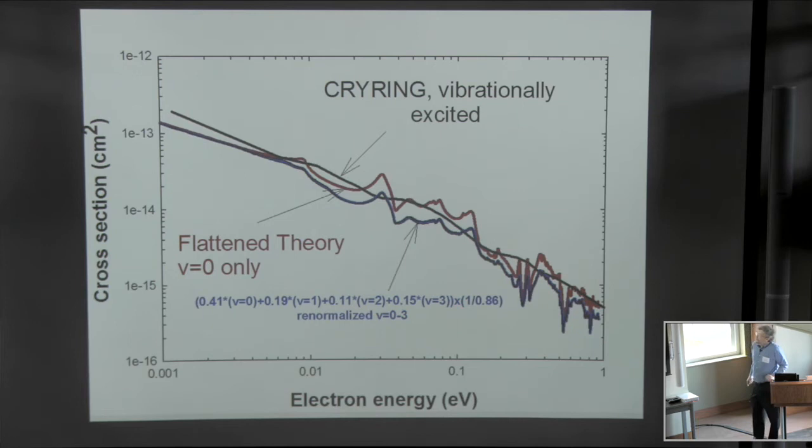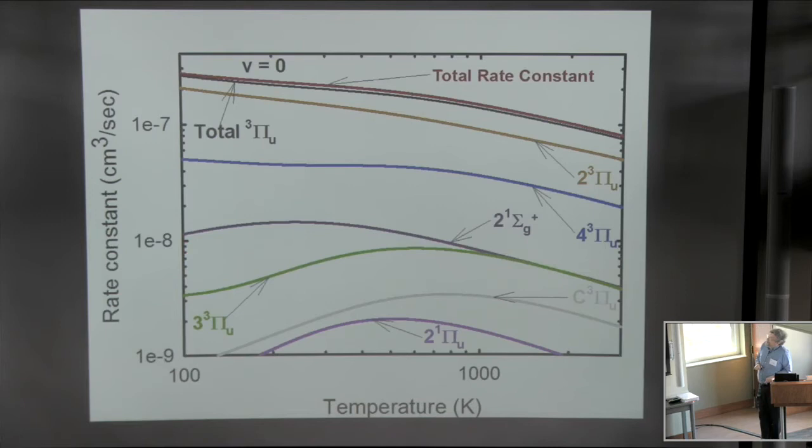The black line is the cry ring measurement shown here, and it shows virtually no structure primarily because this is an early storage ring experiment done back in 1998 where they didn't get the temperature in the perpendicular direction down low enough to start to see some structure in the experiment. The blue curve here is the theory convoluted by the temperatures for the cry ring experiment, and the red line is the v=0 only. You can see there certainly is not 20% agreement between the cross sections, but there's also no structure in the experimental cross section. So it is not the best comparison for testing the theory.